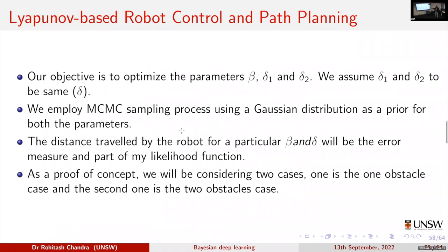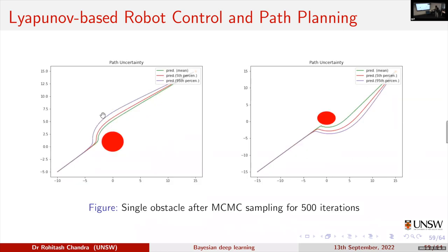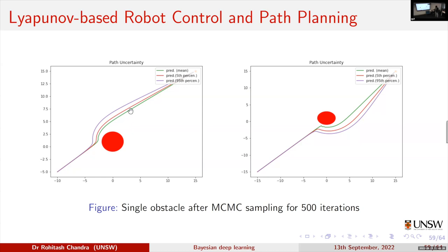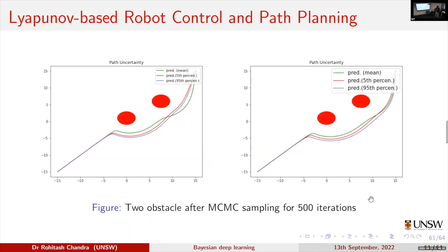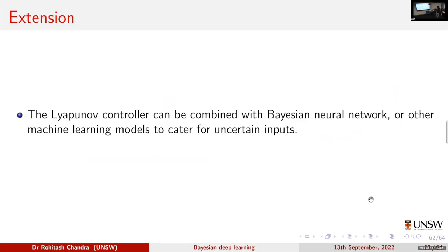We are using a simple MCMC sampler to estimate hyperparameters such as beta, delta one, and delta two — as a proof of concept. We developed a Gaussian likelihood function and have some kind of path uncertainty. The posterior distribution for the delta parameter over 500 iterations of MCMC sampling shows, when there are two different obstacles, there is a bit of uncertainty we can see. This can be combined with Bayesian neural networks for robust uncertainty quantification, connecting back to previous MCMC multitask ideas.